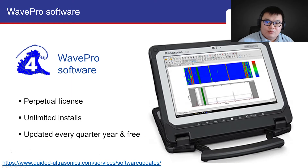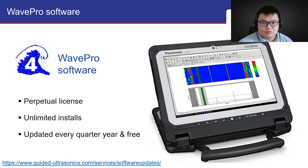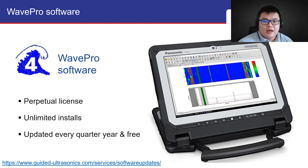WavePro is GUL's guided wave testing software, available when you purchase a GUL screening system. The license is perpetual, which means you only pay for it once with no annual fees. There is no limit on the number of installations, so you can install it on as many computers as you like for flexibility and reliability. Regular software updates are free and can be downloaded from our website, constantly bringing new and improved features to improve inspection speeds and accuracy.